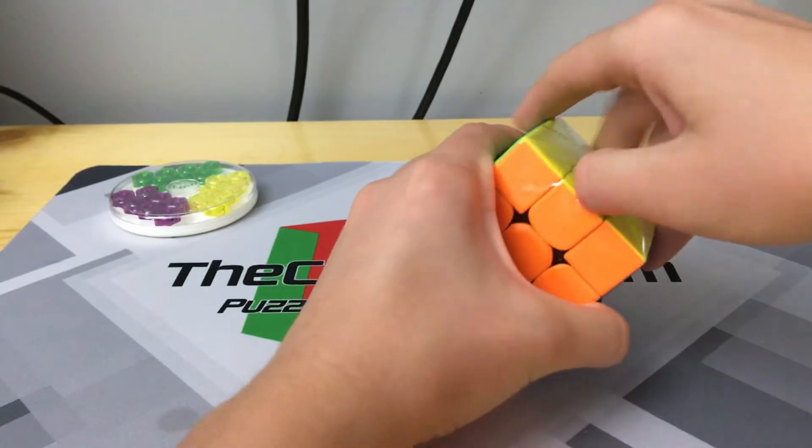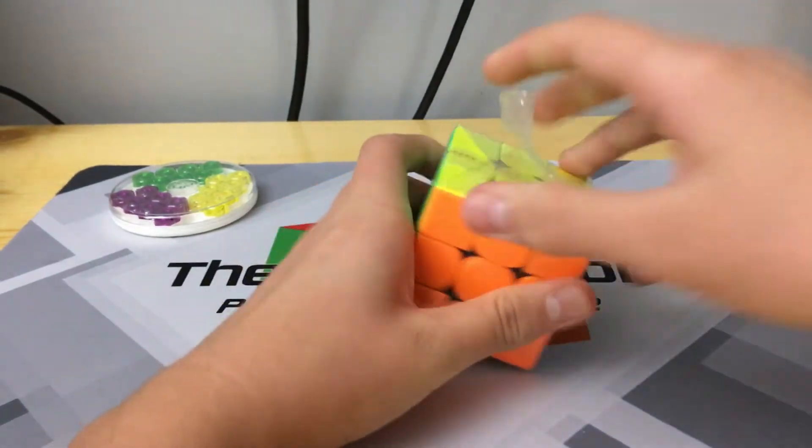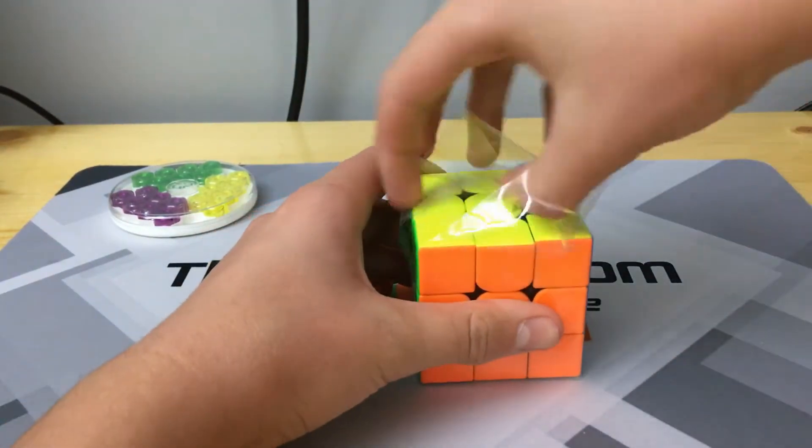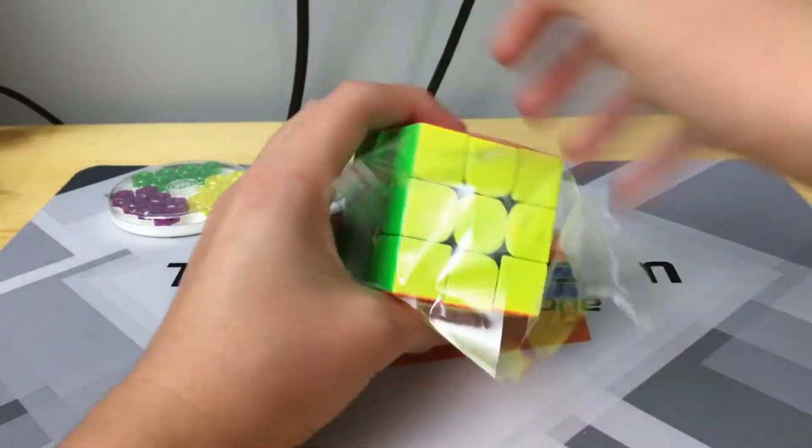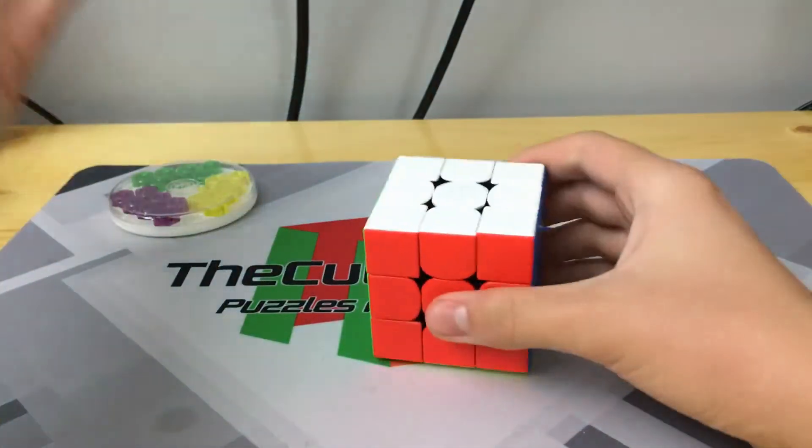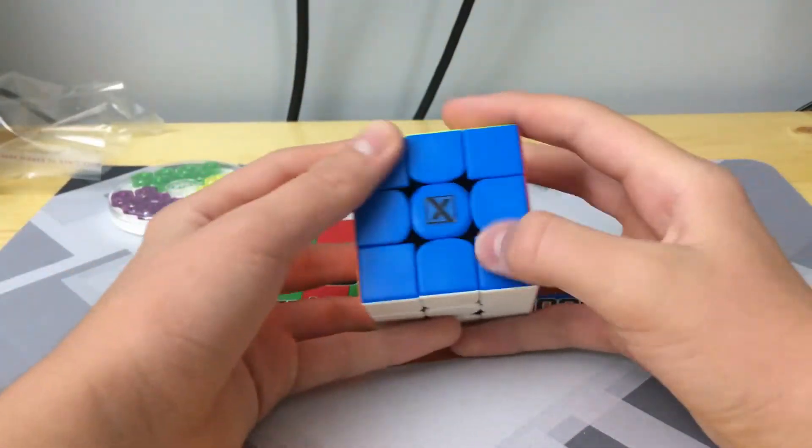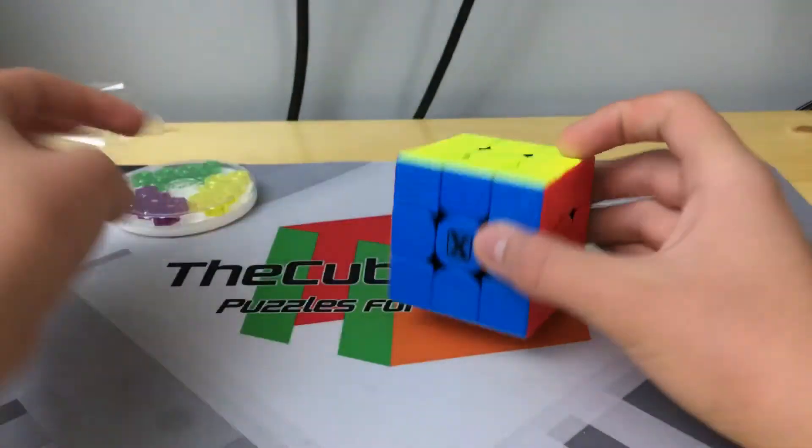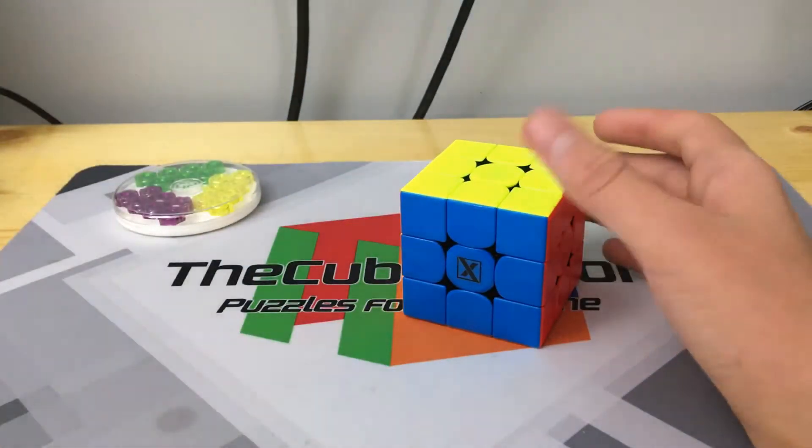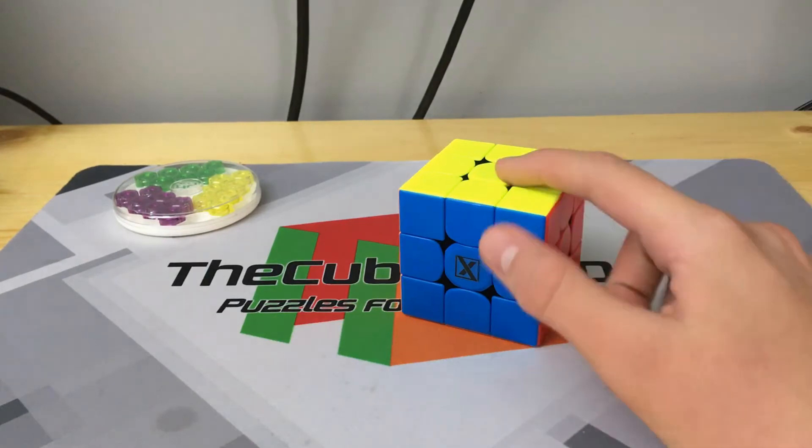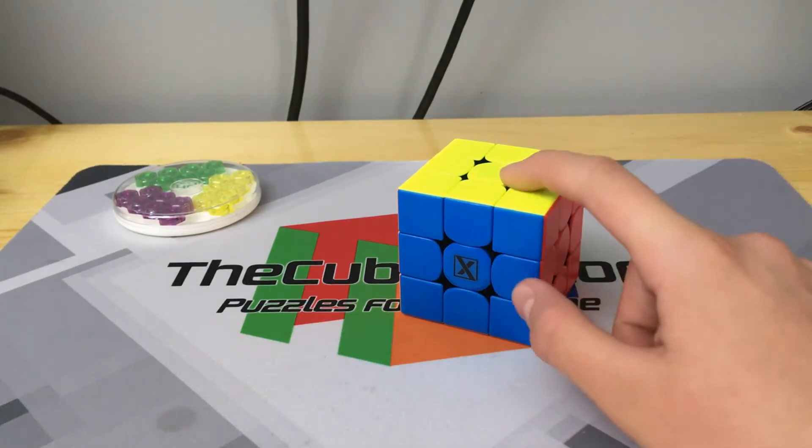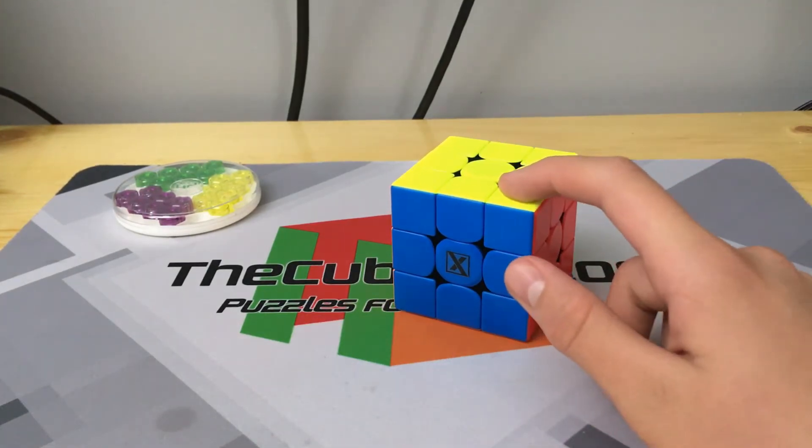Let's unbox this thing. This is a GAN puzzle that has matte plastic. The 356 M was actually supposed to be the 354 M.